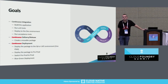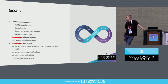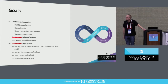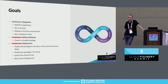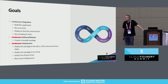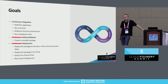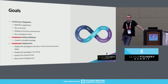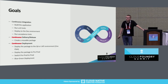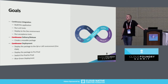When going through the migration process, we need to define goals. We had three milestones. The first was continuous integration: implementing a full pipeline starting from building the application, running unit tests, deploying dynamically to our Cloud Foundry environment, and running acceptance tests against that environment.